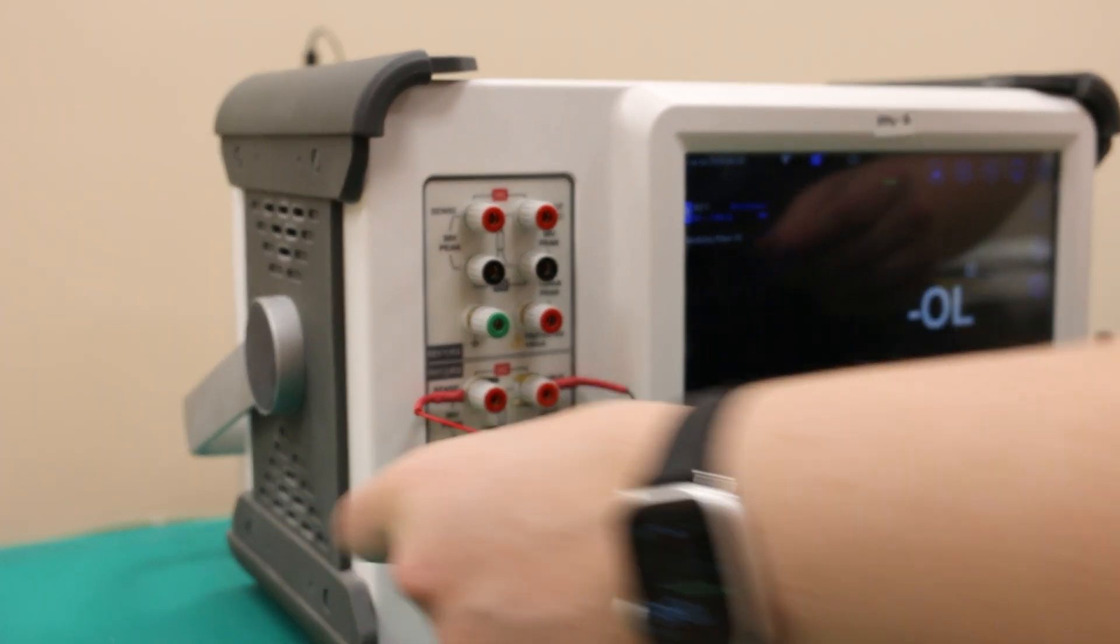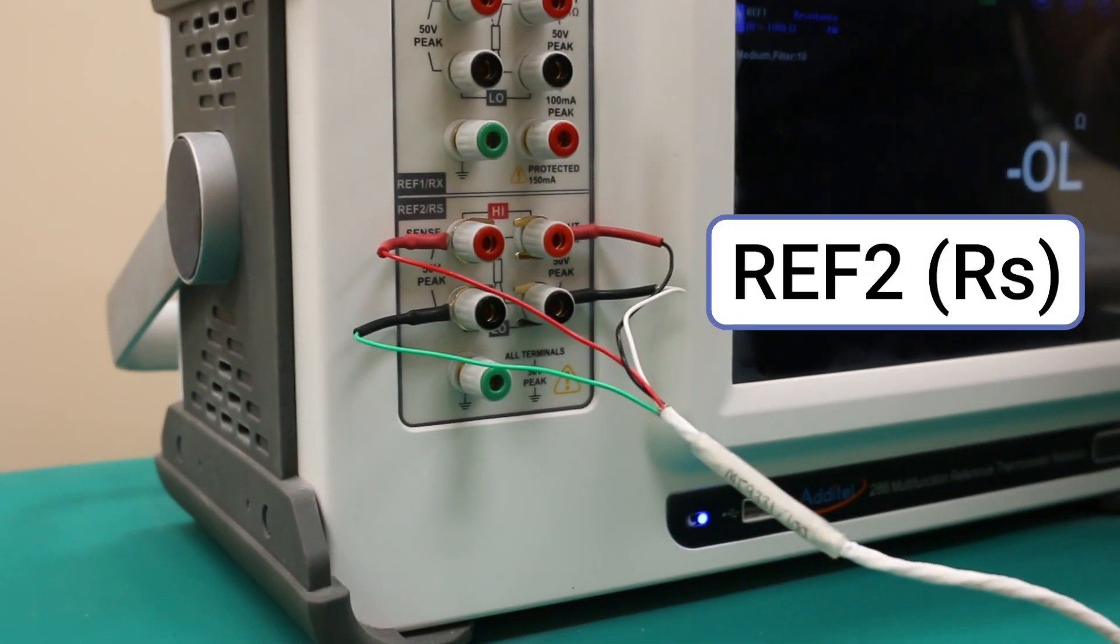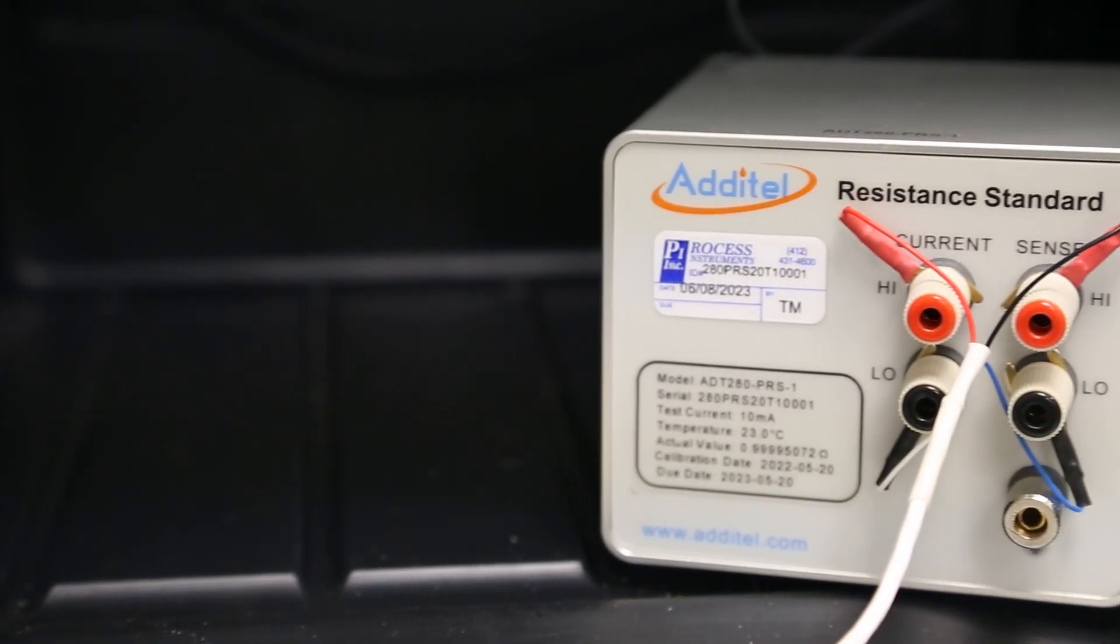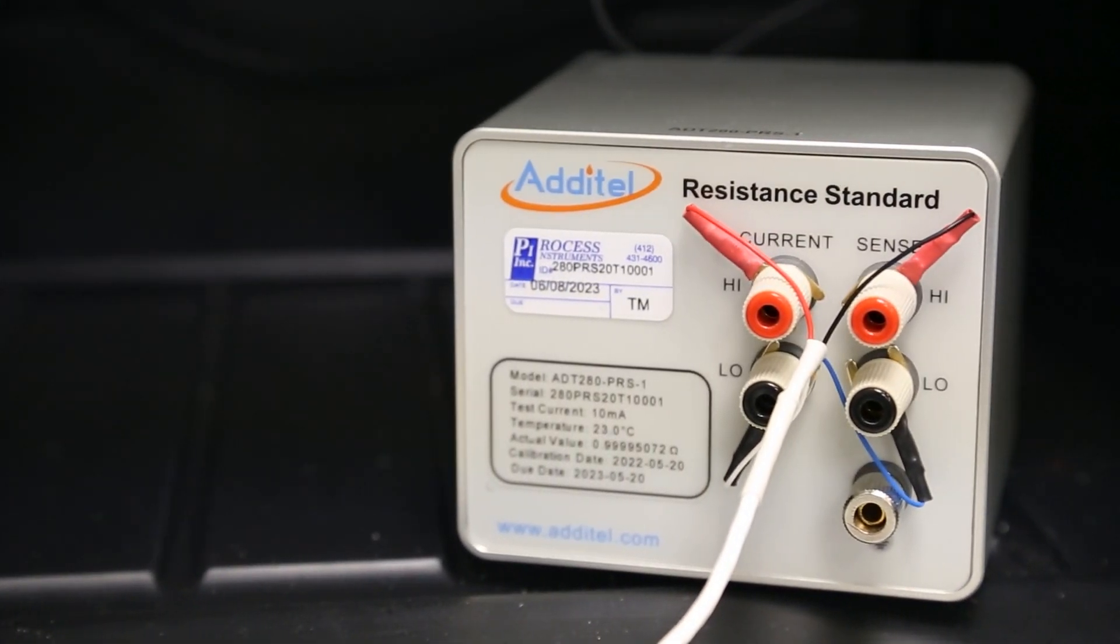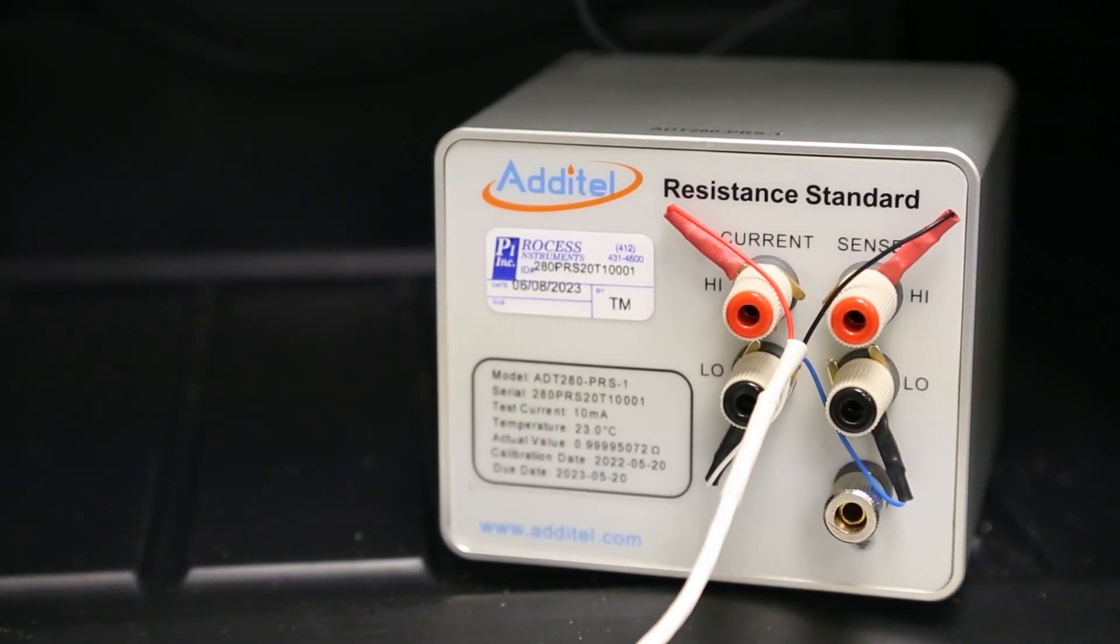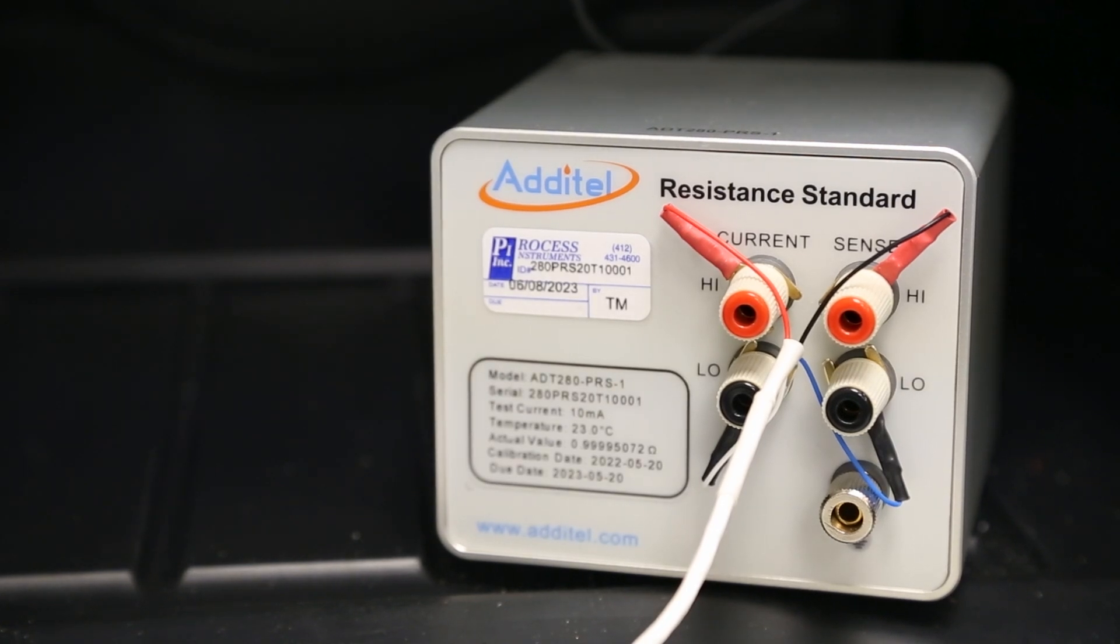To begin, we'll connect a reference standard resistor to the REF2 port on the 286. This 100 ohm resistor is stored in a precision temperature bath held at 23 degrees Celsius and will be used as an external reference to calibrate the five probes against.